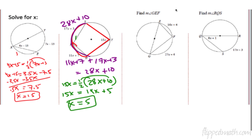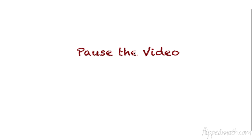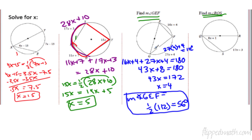Why don't you try the next two by yourself? Warning: they don't want you to solve for x — they want you to solve for the angle. First example: it goes through the center, so GE is the diameter. That means this semicircle equals 180 degrees. Add the two arcs together: 16x plus 4 and 27x plus 4, which should equal 180 degrees. Simple algebra gives x equals 4. But remember, we want the measure of angle GEF — that's half of arc 27x plus 4. Plug in x equals 4: you get 112 degrees for the arc, so the angle is 56 degrees.